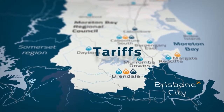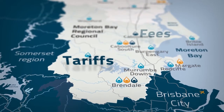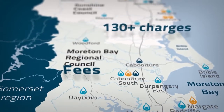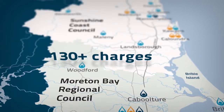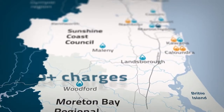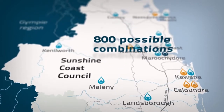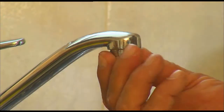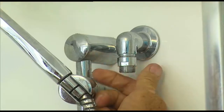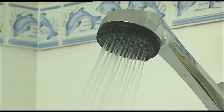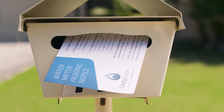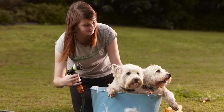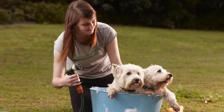When Unity Water was formed, we inherited a very complex set of tariffs, fees and charges from six different local authorities. With fixed charges making up a significant portion of your bill, so even if you did the right thing and minimised your water use, this was not clearly reflected in your bill. It's understandable that you've been asking for more control over your bills.